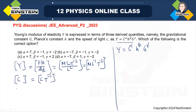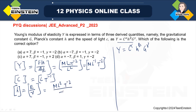And for H, Planck's constant, H equals E by nu, where nu is the frequency. E is the energy. We have dimension for energy as M L squared T to the power minus 2, divided by T to the power minus 1 — that is the dimension of frequency. Ultimately, this gives M L squared T to the power minus 1.